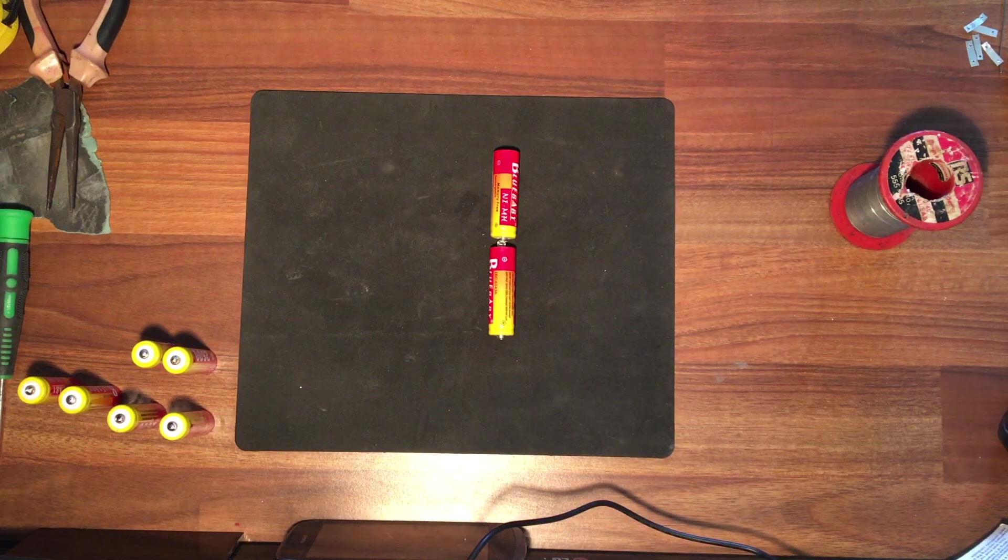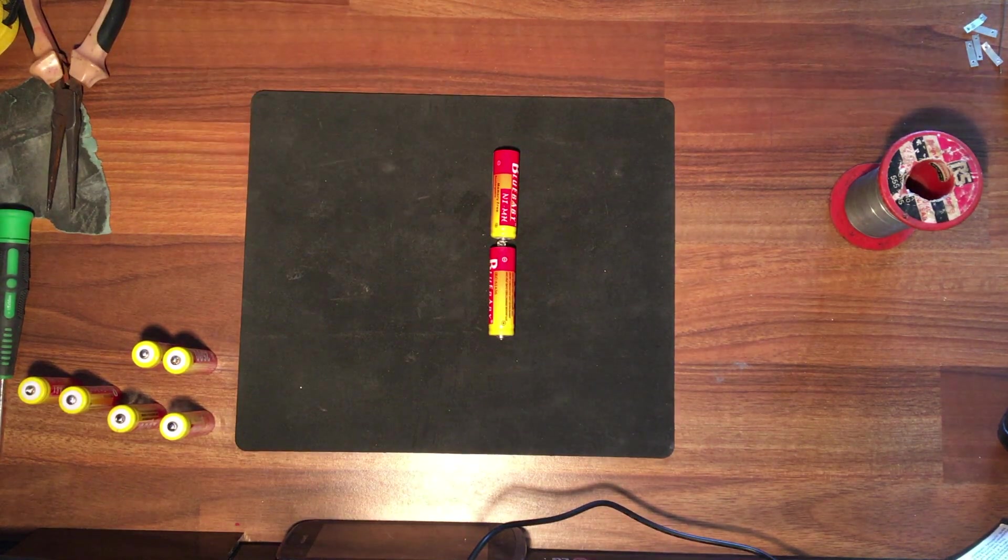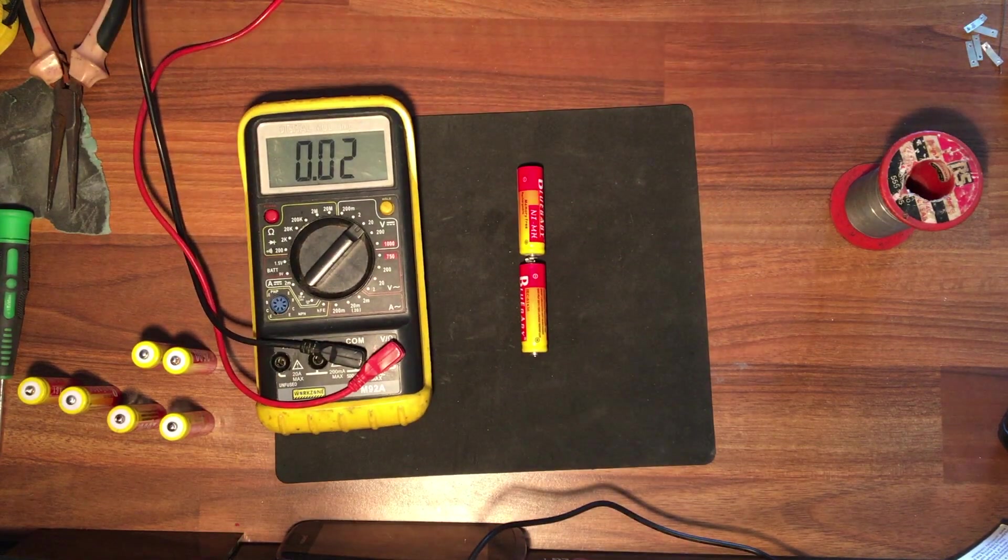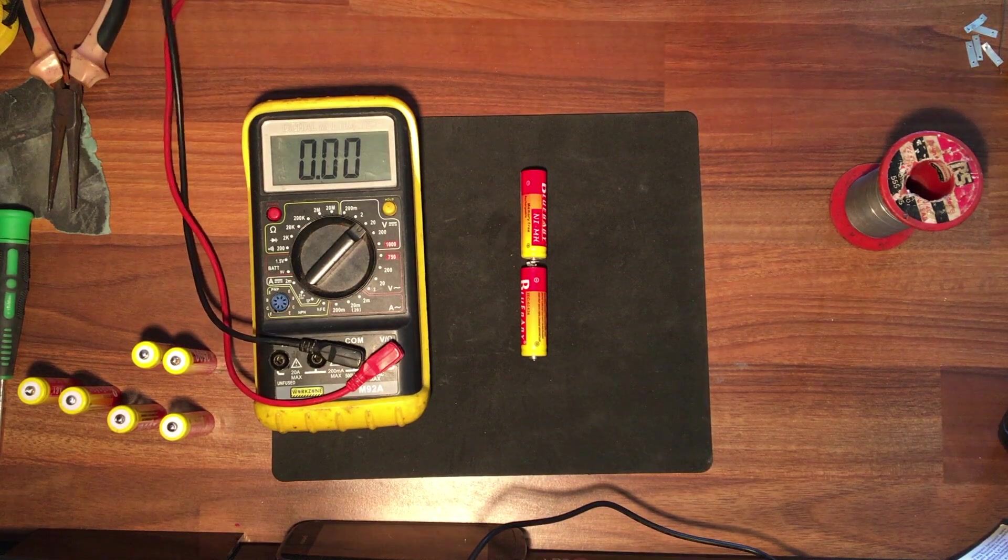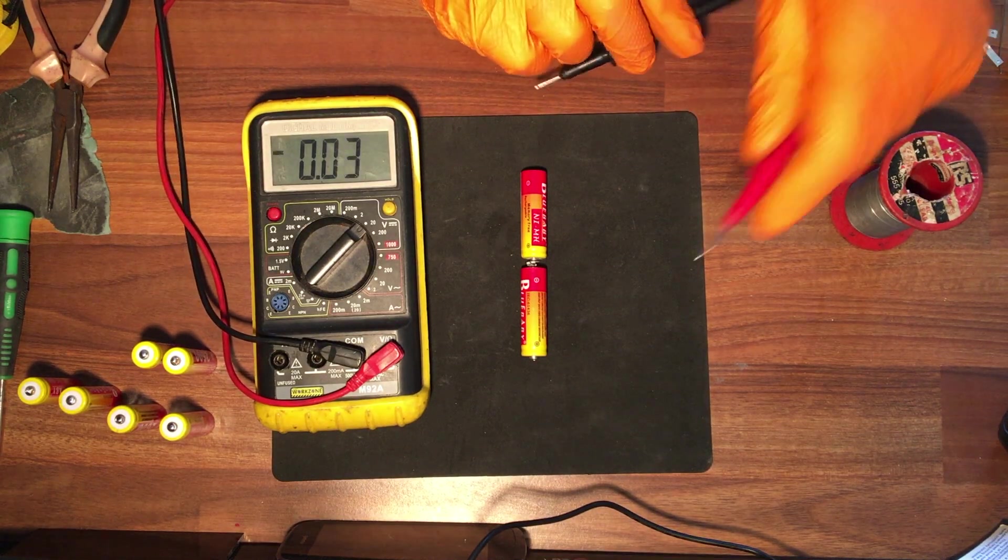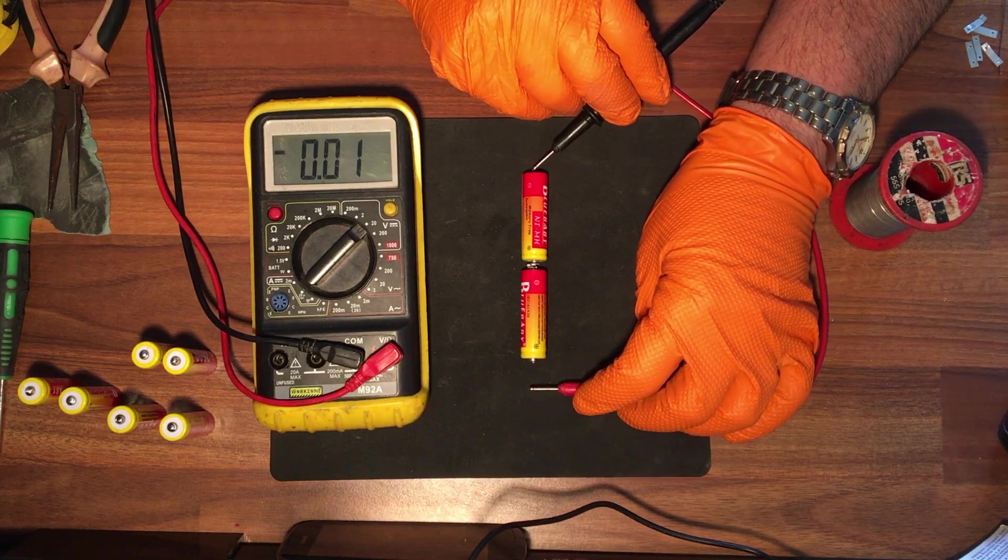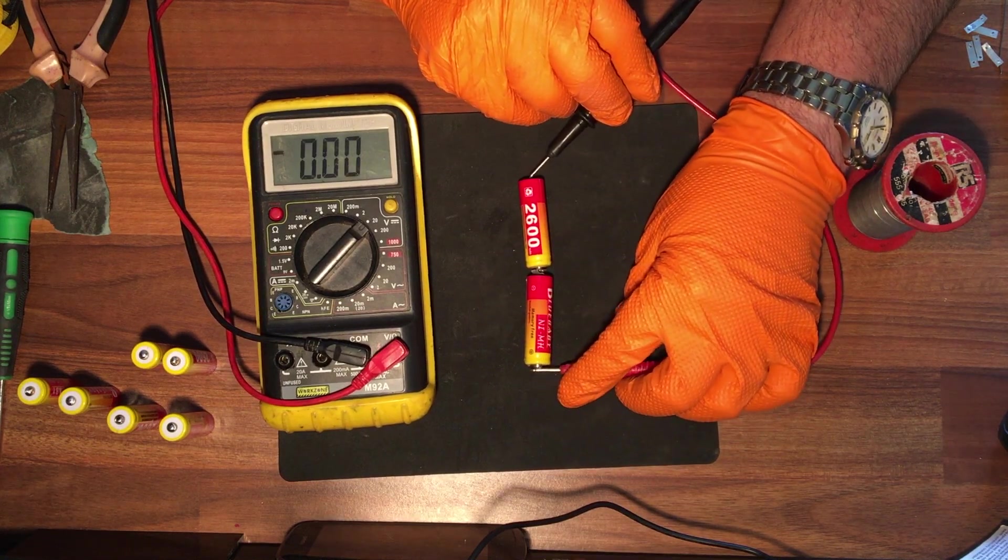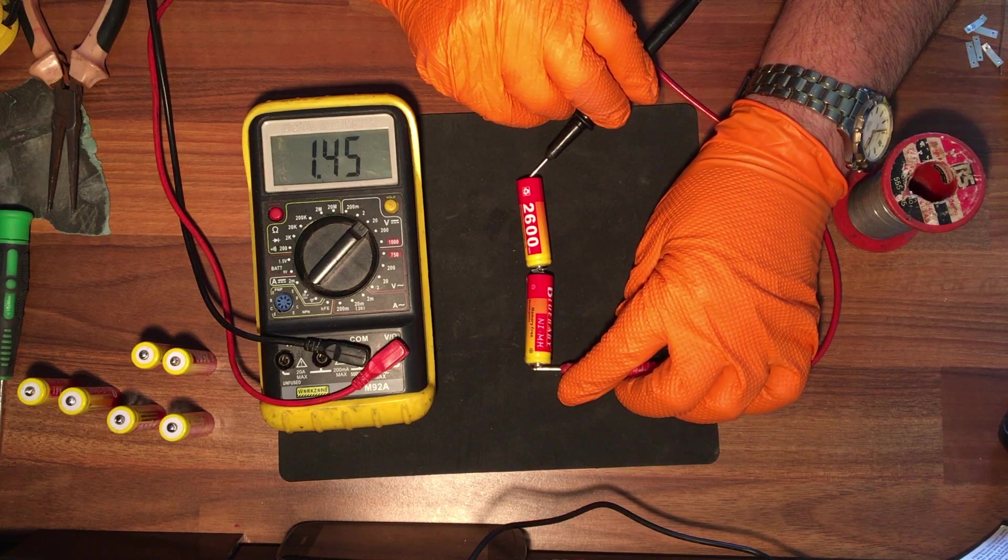Now another thing to note is as you're going along, it's a good idea to check your voltage so you make sure that you have a connection. Otherwise you could have the whole lot done and one of the pieces of solder or one of the tabs is not working. So we should have a minimum of 2.4 volts here. We have 2.56 volts so we have a circuit.